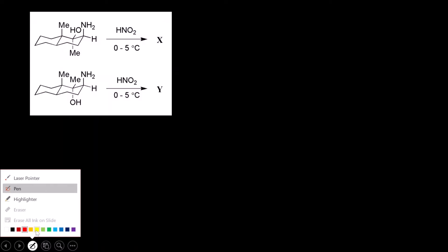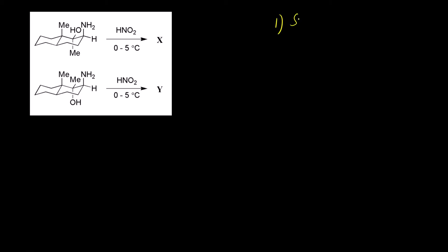Now here there are two things. If you see the options you can see in some options there is a ketone and some rearrangement that is taking place, or you can see an epoxide that is getting formed. Here there is a competition between two reactions. One is the semi-pinacol-pinacolone rearrangement. Second reaction that is competing is the epoxide formation reaction.